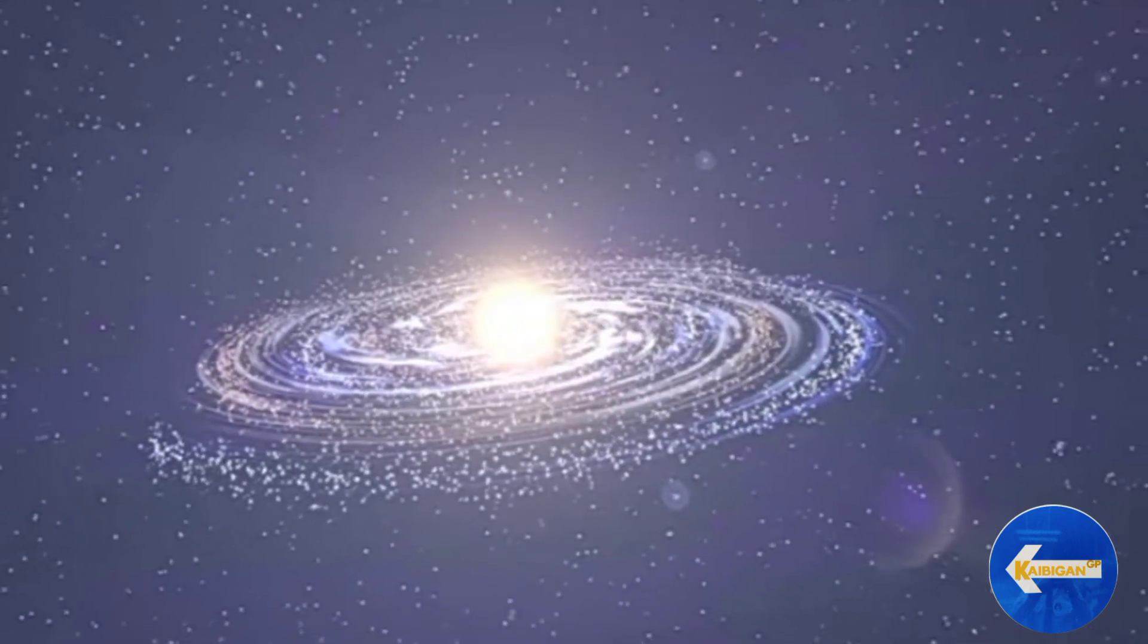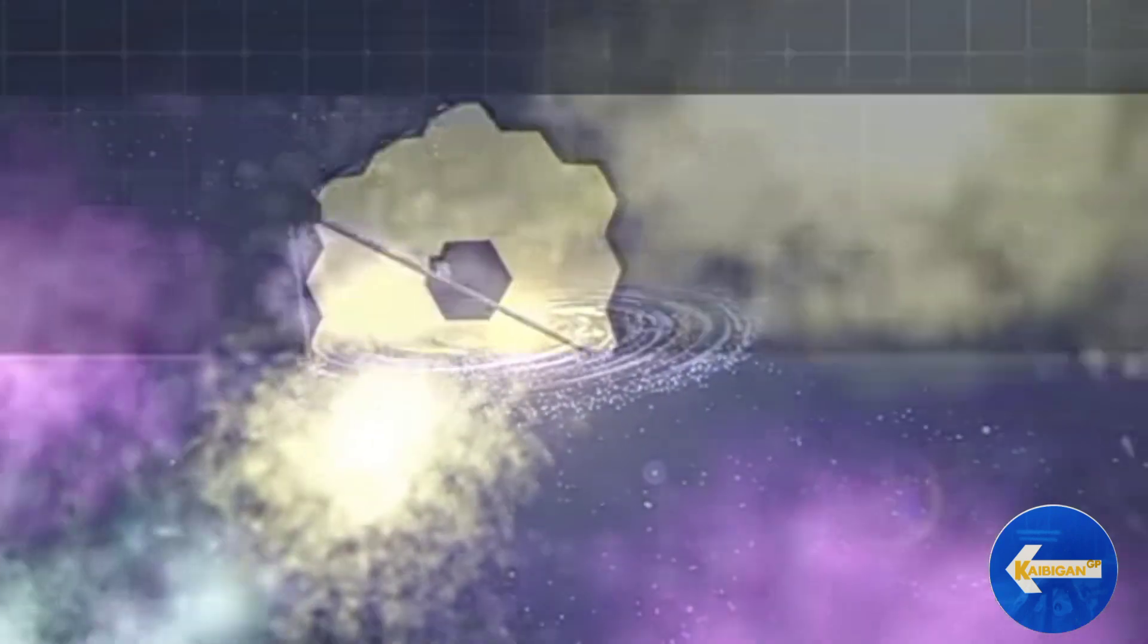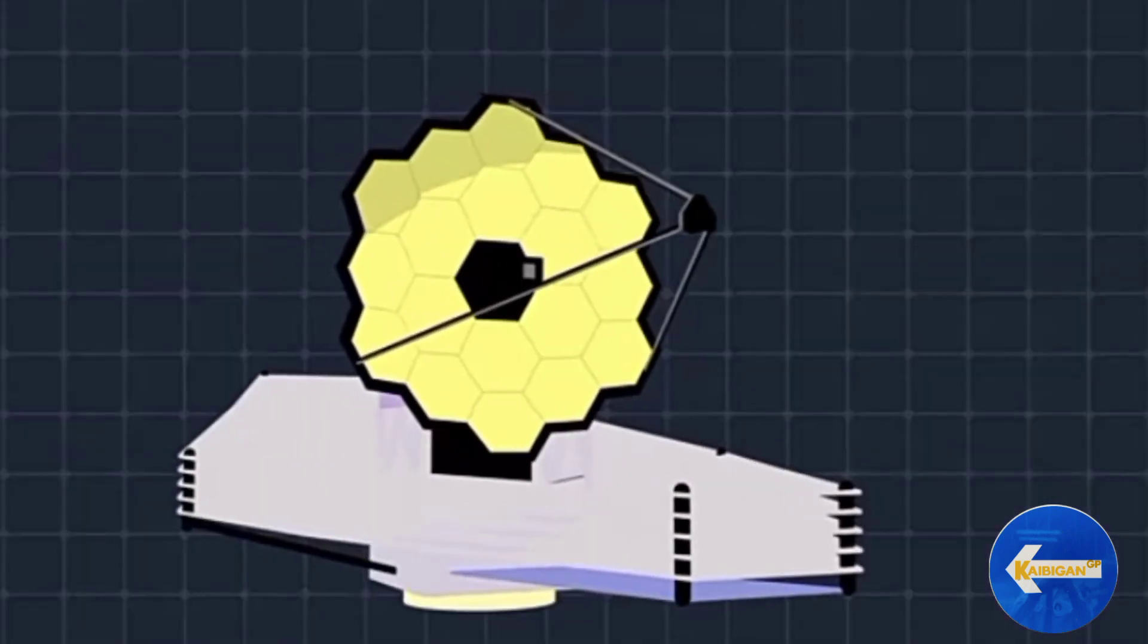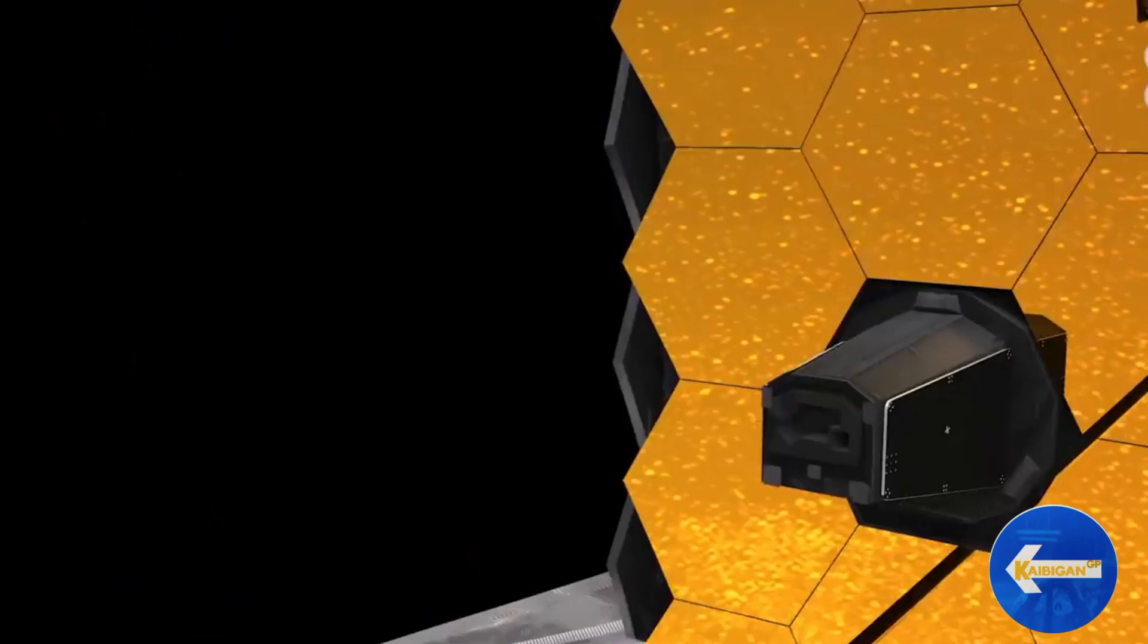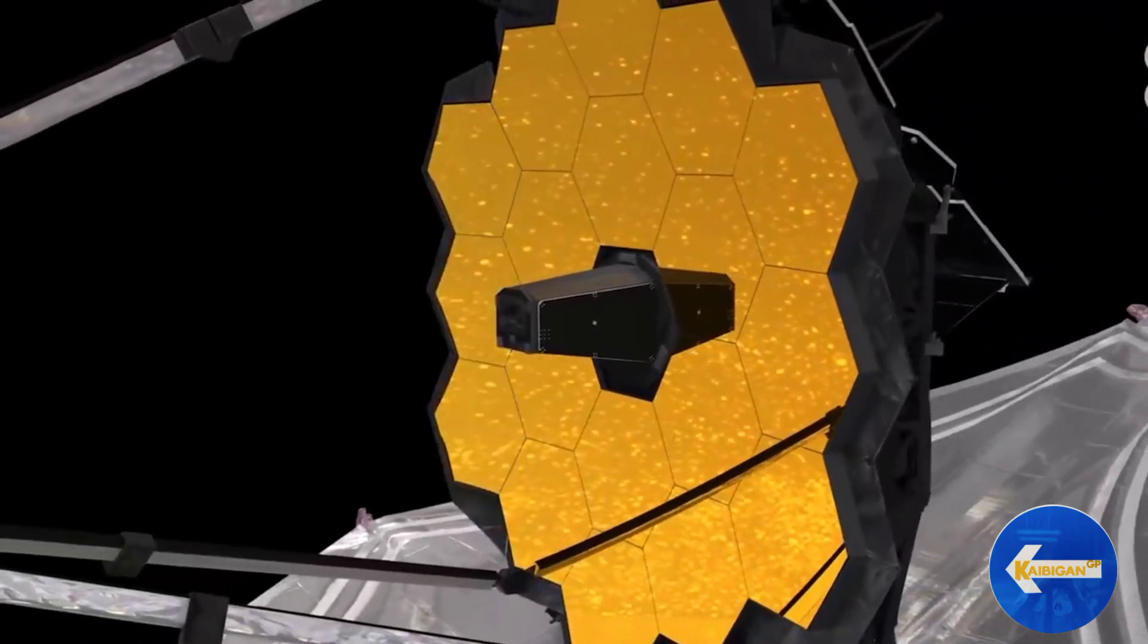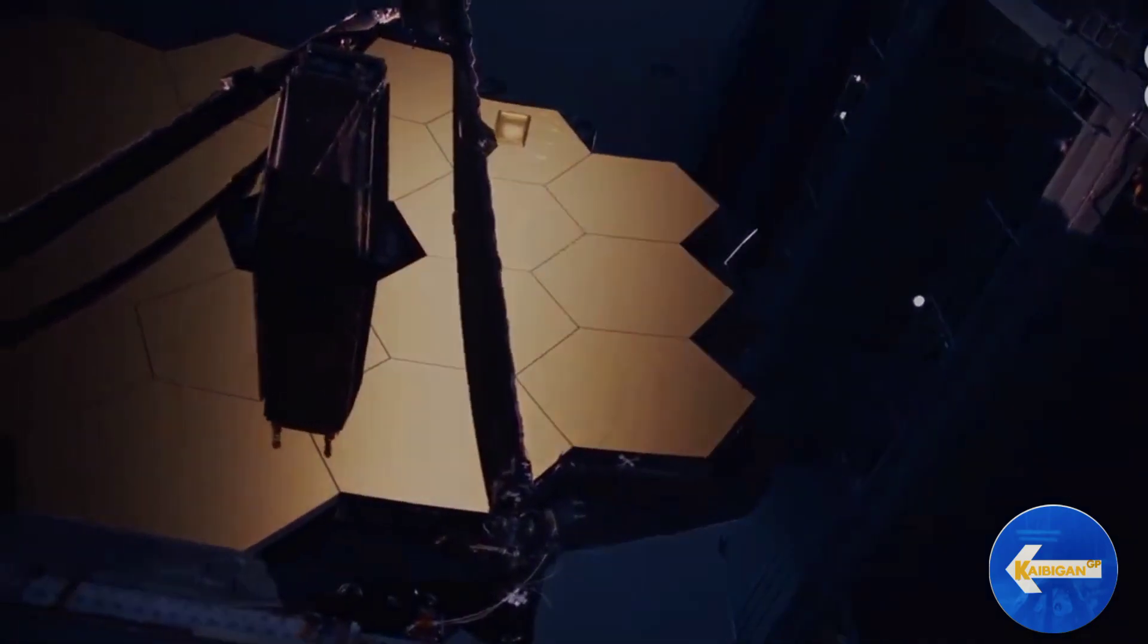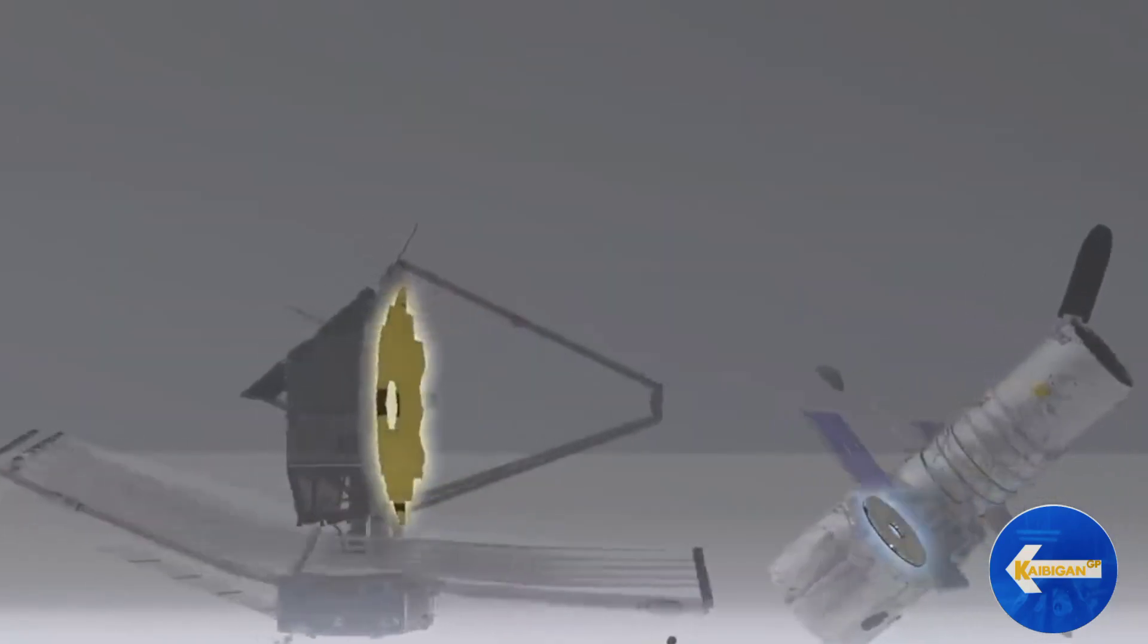Ang James Webb Telescope, isa sa pinakahightik na kagamitan kaya ito ay pinananatiling malamig ang teleskopyo. Iyon ay dahil kung mainit ang isang teleskopyo, ay maaaring itong maglabas ng sarili nitong mga infrared wavelength. Ay maaaring maapiktuhan o makagambala sa mga obserbasyon.